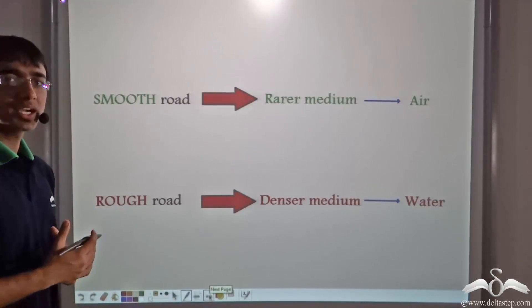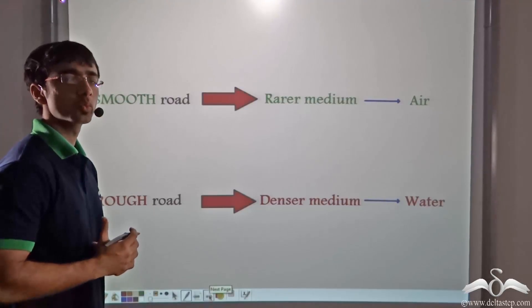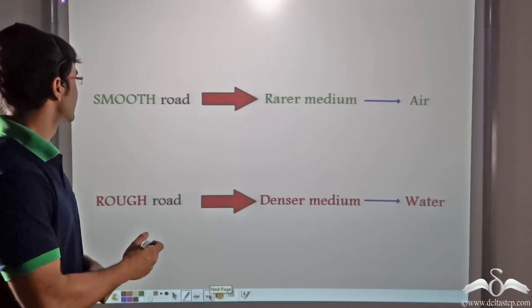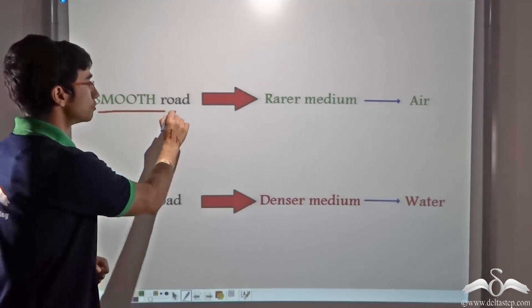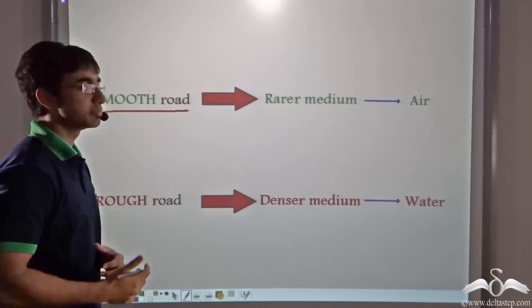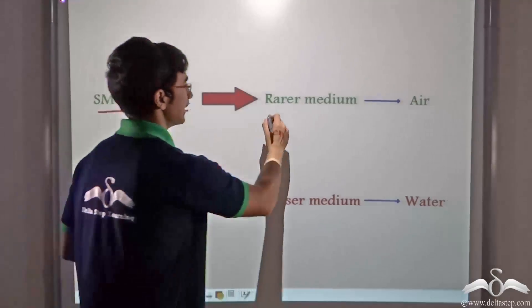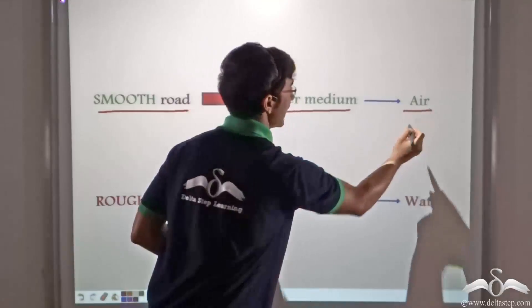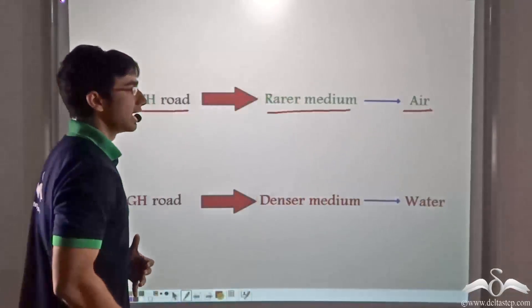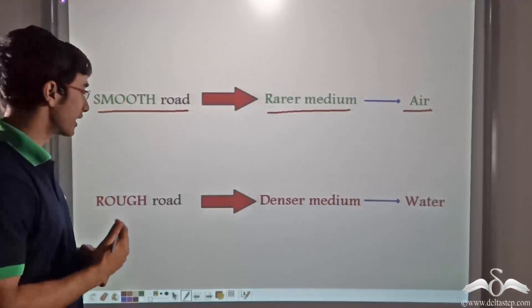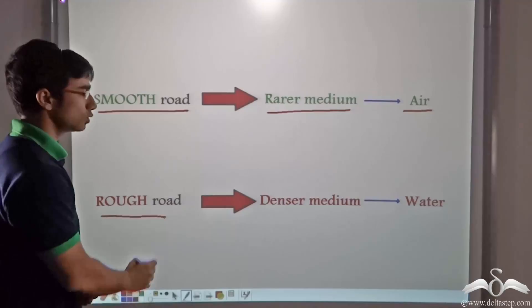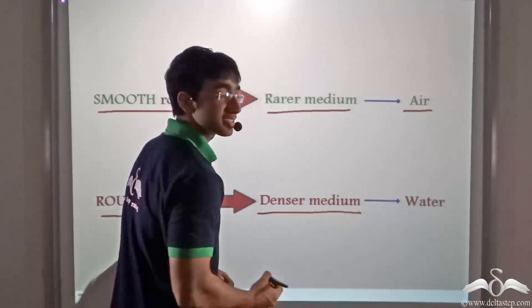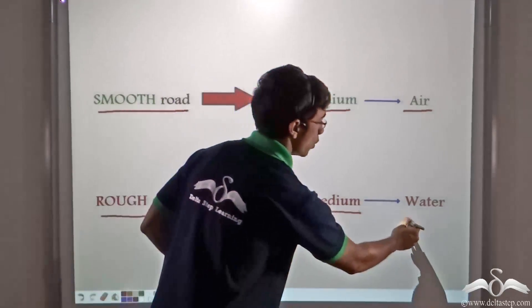Now we are drawing an analogy. The analogy is that we are comparing a smooth road to a rarer medium — that is, a less dense medium. In our case, air. And we are comparing the rough or muddy road to a denser medium. In our case, water.